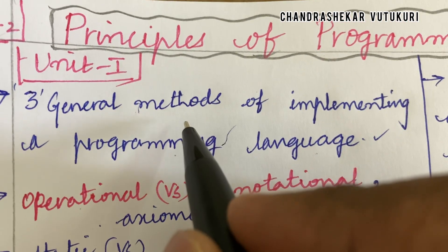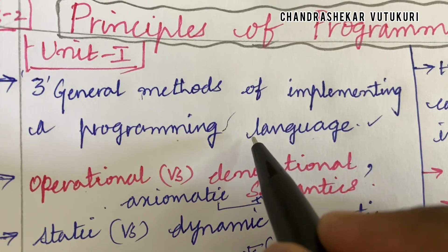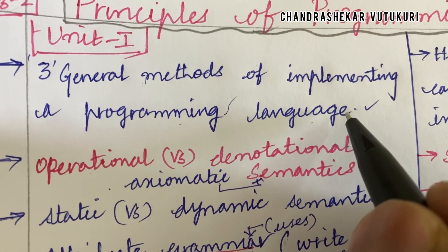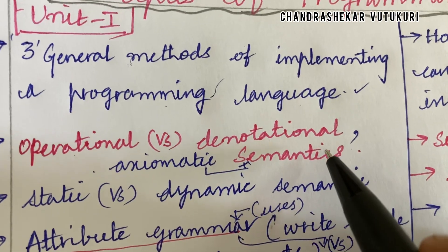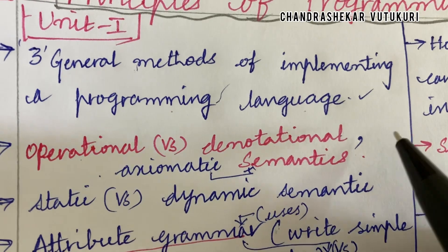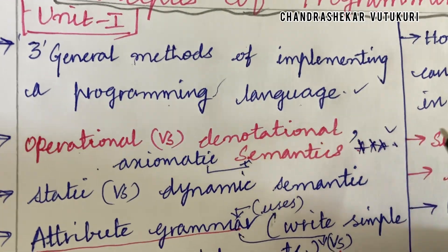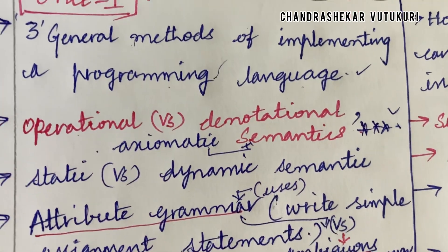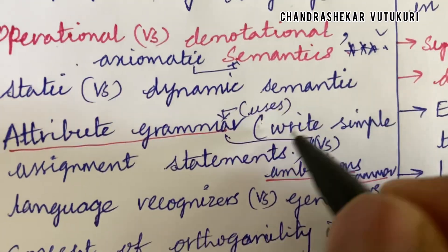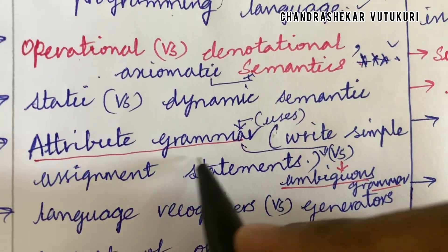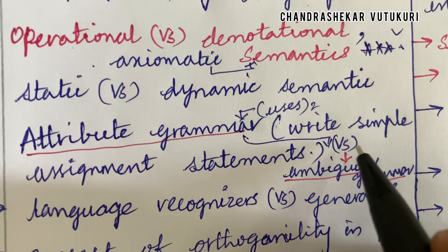The first unit I am going to work out for you all covers the three general methods of implementing a programming language. Operational versus denotational semantics, or axiomatic semantics, is said to be a topmost and sure short question, along with their differences. Static versus dynamic semantics differences, attribute grammar and its use, may be a short question.